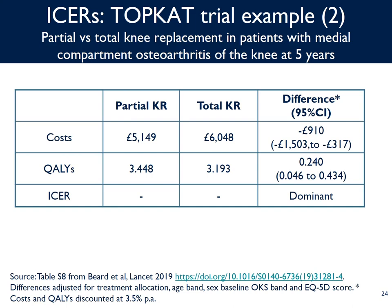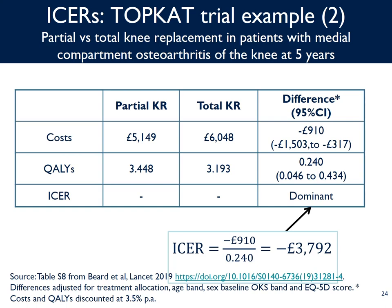The other example is from the TOPCAT trial, which compared partial versus total knee replacement in patients with medial compartment osteoarthritis of the knee at 5 years. The partial knee was cheaper than total knee replacement at 5 years of follow-up — about £910 cheaper per patient — and it was also associated with more QALYs than total knee replacement, 0.240 per patient. This placed the partial knee replacement in the southeast quadrant: cheaper and more effective than total knee replacement.